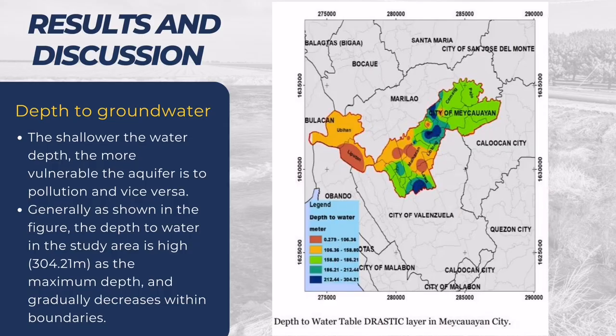In this section, findings in each designated DRASTIC rating in relation to DRASTIC parameters for Meikawayan City are presented and discussed. As shown in the figure, following the color dark blue in the legend, the depth to water in the study area has a maximum depth of 304.21 meters and then gradually decreases within boundaries.